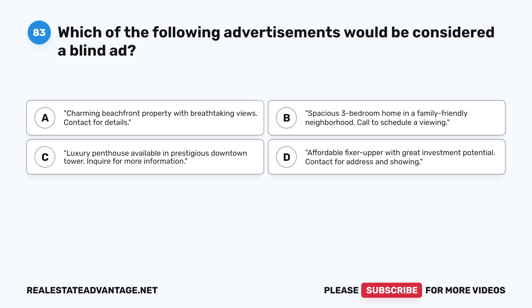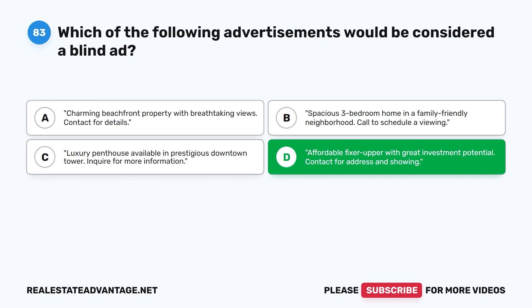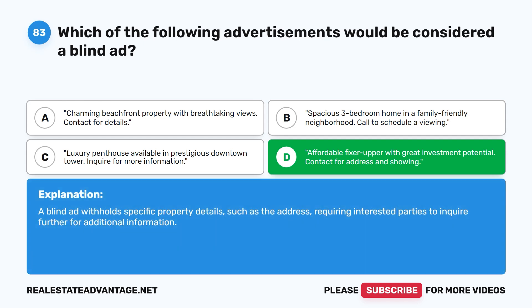Question 83: Which of the following advertisements would be considered a blind ad? A. Charming beachfront property with breathtaking views, contact for details. B. Spacious three-bedroom home in a family-friendly neighborhood, call to schedule a viewing. C. Luxury penthouse available in prestigious downtown tower, inquire for more information. D. Affordable fixer-upper with great investment potential, contact for address and showing. The correct answer is D. A blind ad withholds specific property details, such as the address, requiring interested parties to inquire further for additional information.